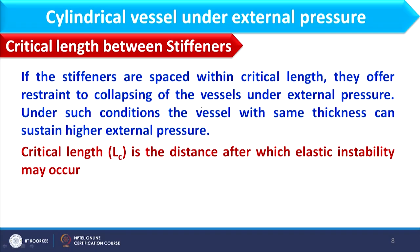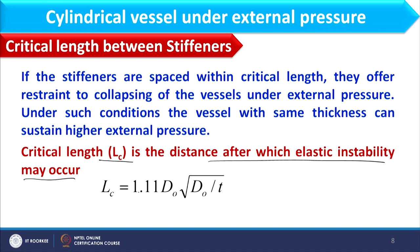It is mandatory to define the critical length between stiffeners. The critical length, denoted LC, is the distance after which elastic instability may occur, and is given by the expression: LC = 1.11 × D₀ × √(D₀/T), where T is the thickness of the vessel and D₀ is the outer diameter of the vessel.